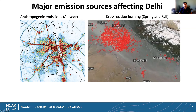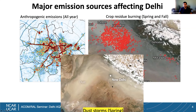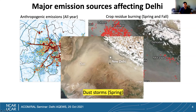In addition to emissions from Delhi itself, other sources are frequently held responsible for Delhi's air quality problem. One is crop residue burning that occurs during spring and fall, especially in the states of Haryana and Punjab, located northwest of Delhi. This snapshot shows retrieved fire locations over northern India during end of October. Smoke from these fires sometimes travels to New Delhi. Delhi is also frequently affected by dust storms, especially during springtime.